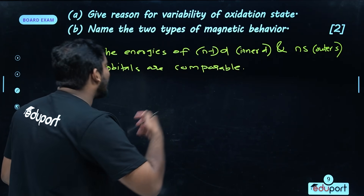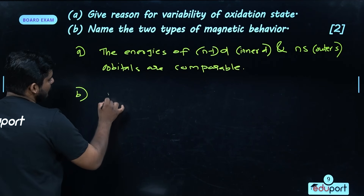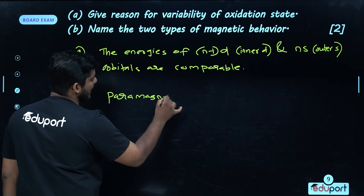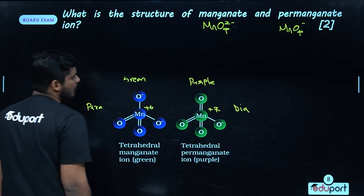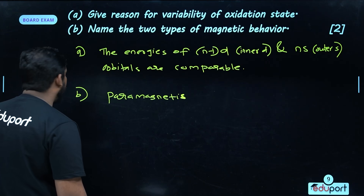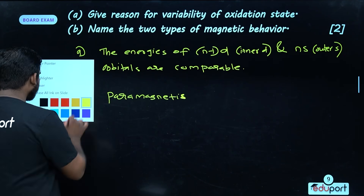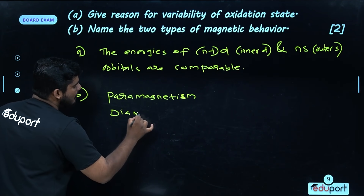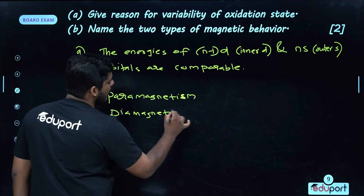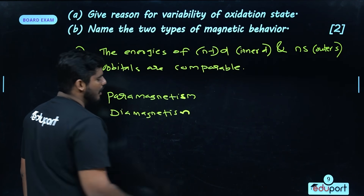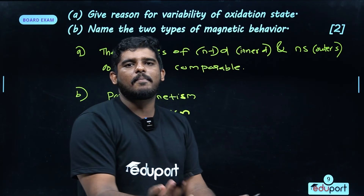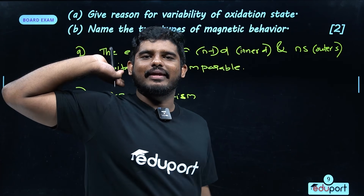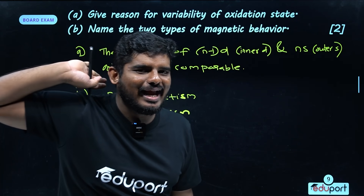Name two types of magnetic behavior. First: Paramagnetism — due to the presence of unpaired electrons in the atom. Second: Diamagnetism — when all electrons are paired. Paramagnetism is due to unpaired electrons; diamagnetism is due to all electrons being paired.